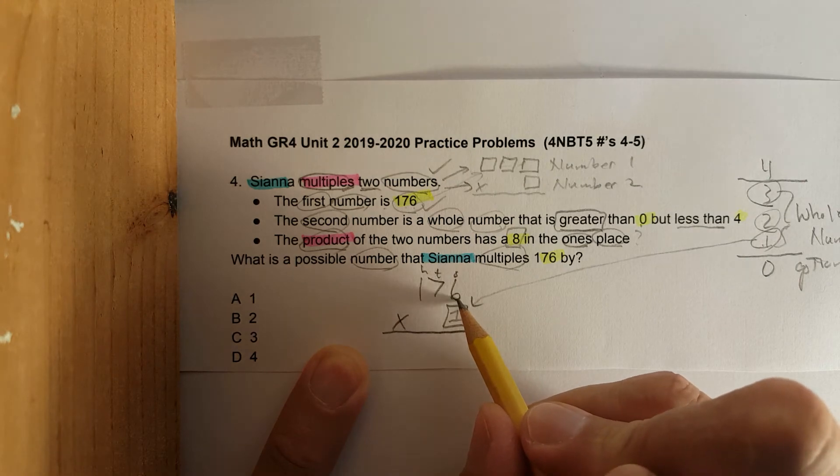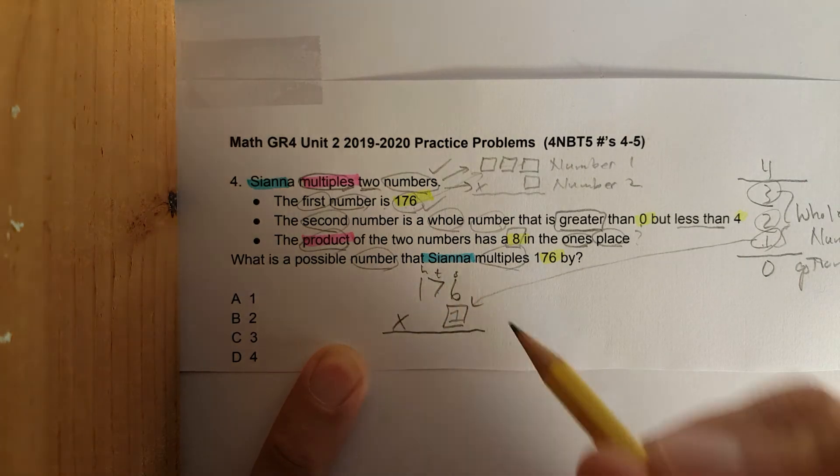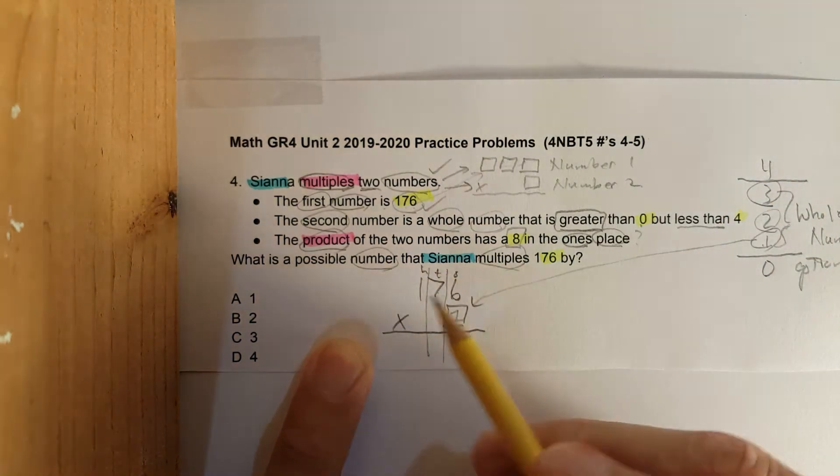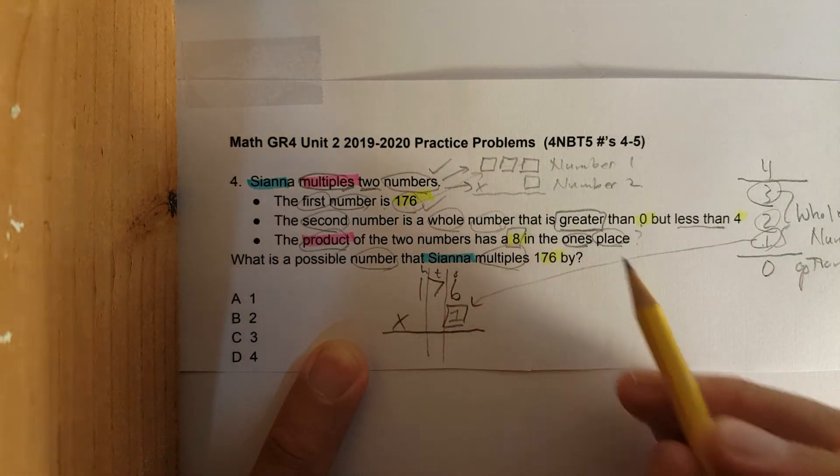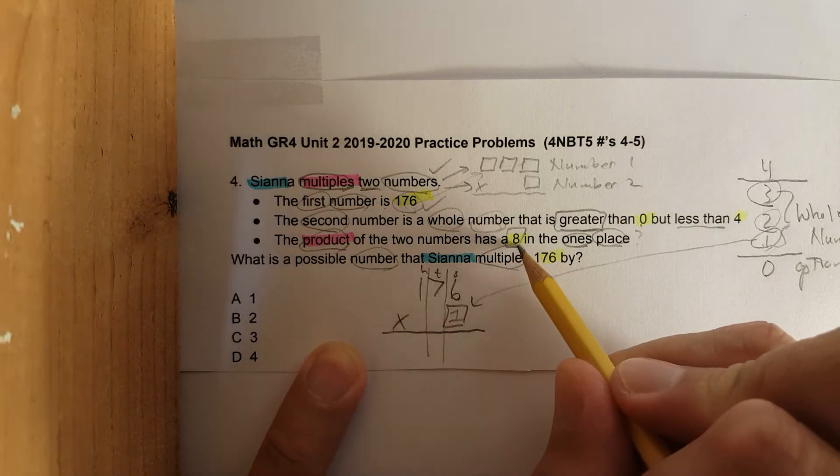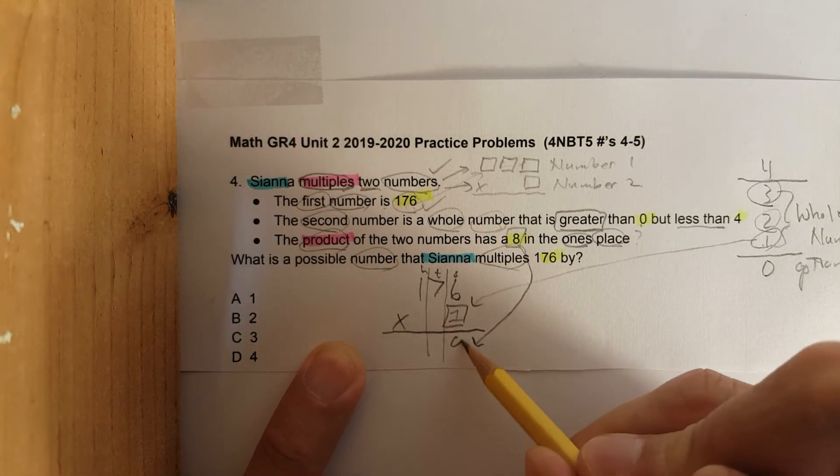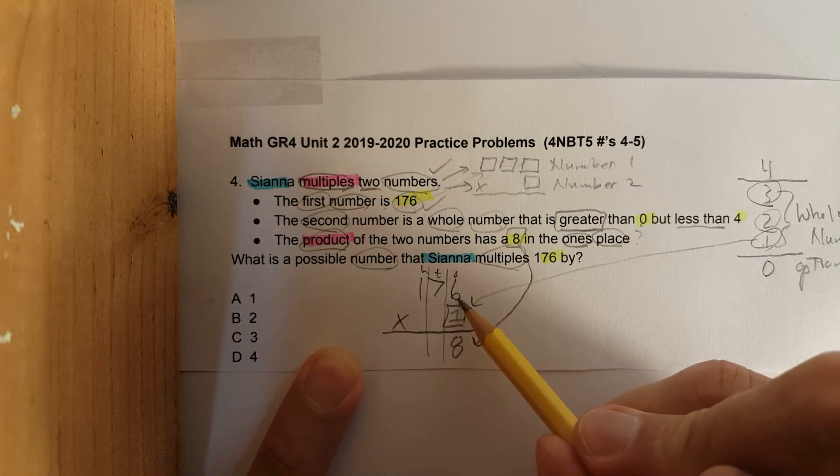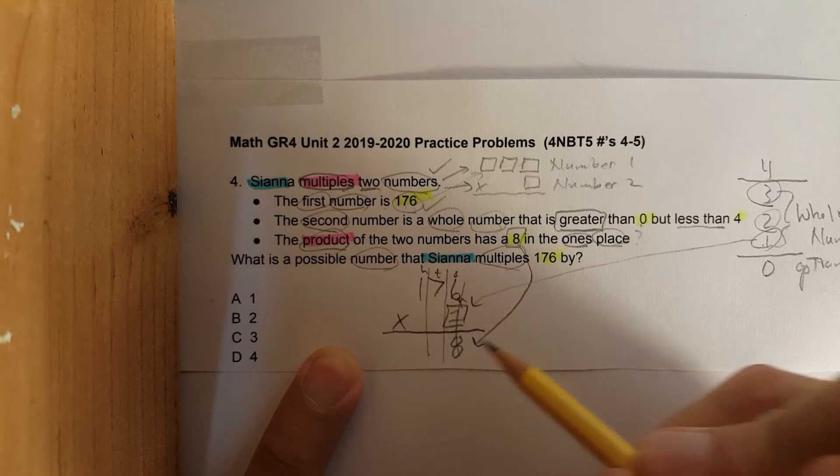The six is in the ones place, the seven is in the tens, and then the hundreds. The only information that we have is the product of the two numbers has an eight in the ones place. In other words, this needs to be eight. Right away, when you take one times six, one times six is not eight. So that doesn't work.